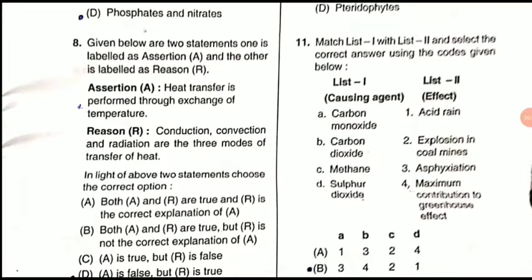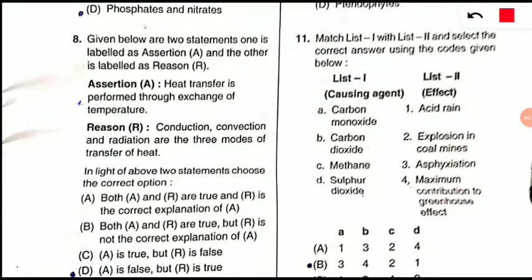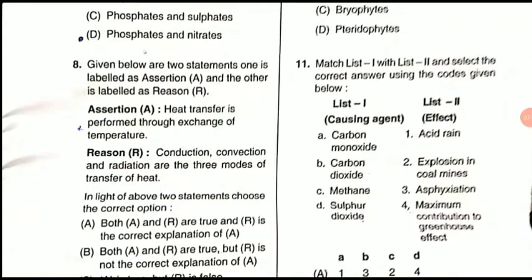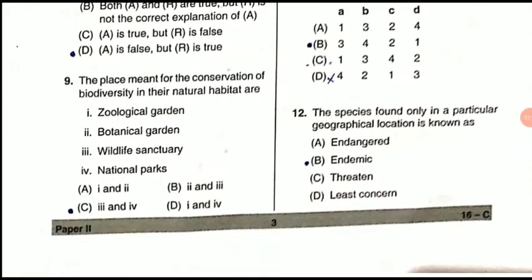Question 8: Assertion and Reasoning — the assertion states heat transfer is performed through exchange of temperature, and the reason states conduction, convection, and radiation are the three modes of transfer of heat. The correct option is B — both statements are correct but the reason does not give the correct explanation of the assertion statement.